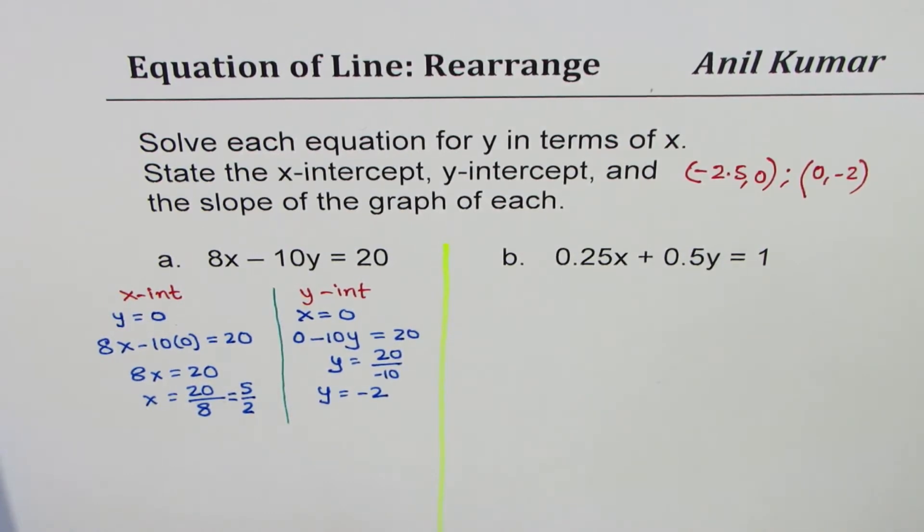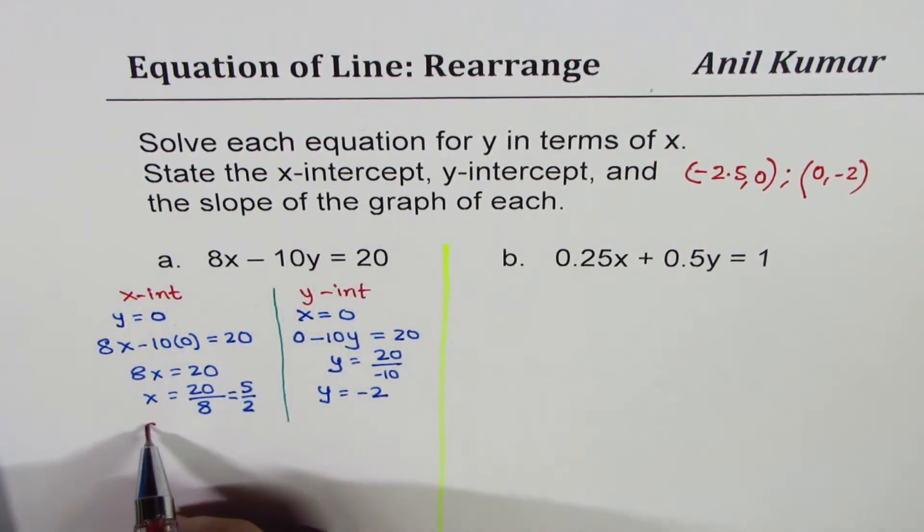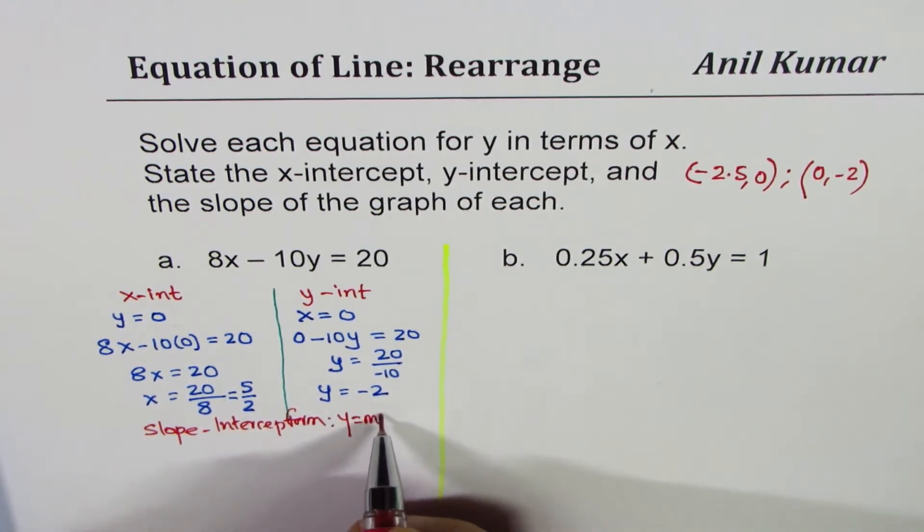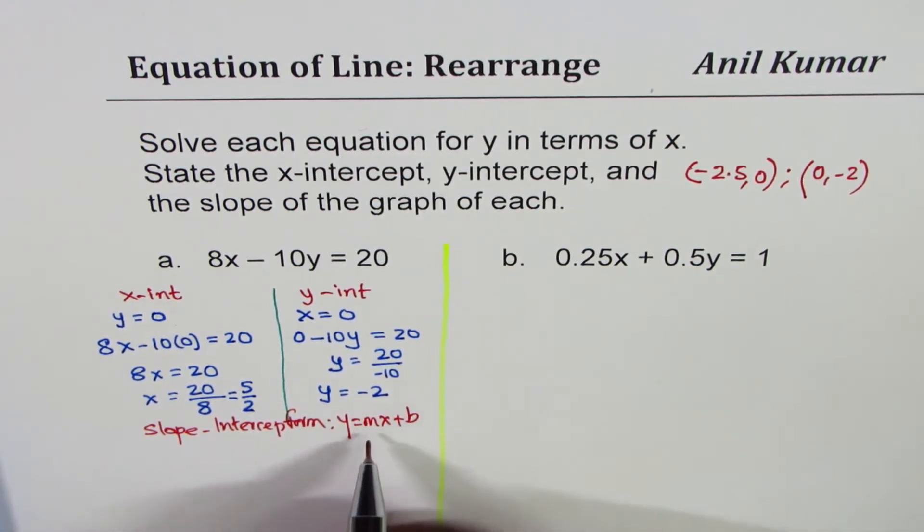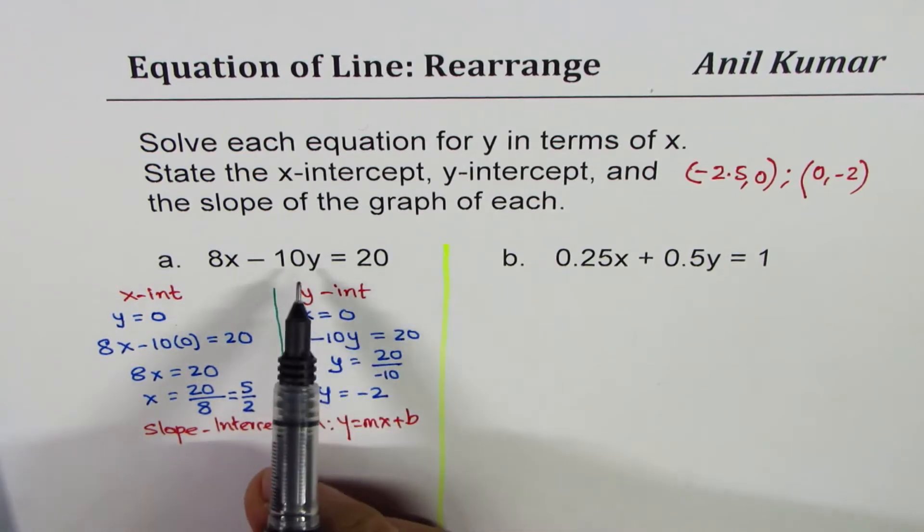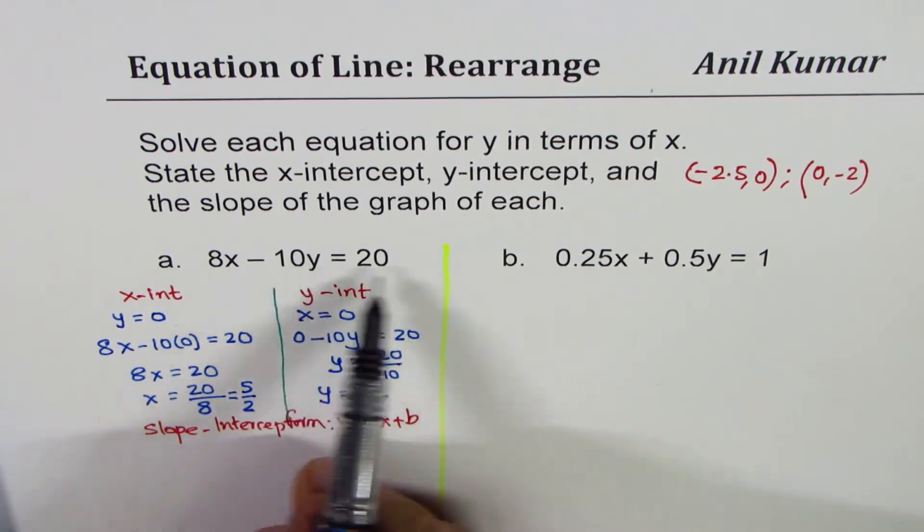Now we have to find the slope. How do you find the slope? Best way to find slope is, write the equation as slope-intercept form. Slope-intercept, y-intercept form. What is this y-intercept form? The equation is of the form y equals mx plus b, where m is the slope and b is y-intercept. So we need to rearrange so that we can isolate y, that's the whole idea.